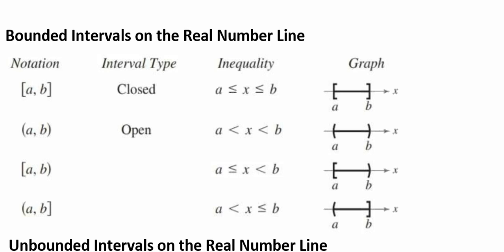In the bounded intervals shown on screen, the real numbers A and B are the end points of each interval. When we see a bracket on both sides, this is considered a closed interval type. We would write that as A is less than or equal to X, which is less than or equal to B. When we graph that, we put two brackets at the A and the B endpoints. You might have learned this as a closed-in circle at those end points.